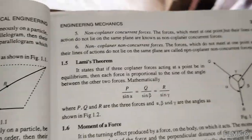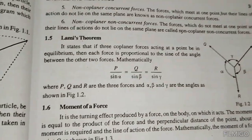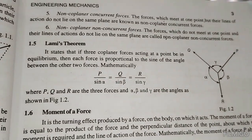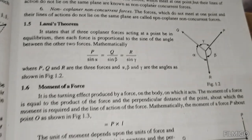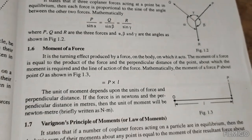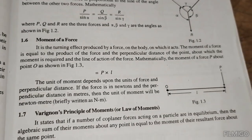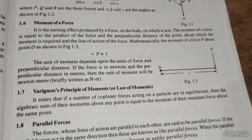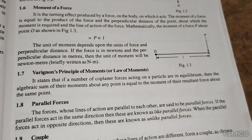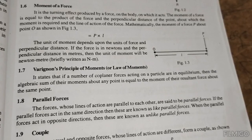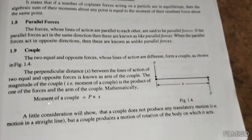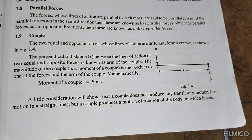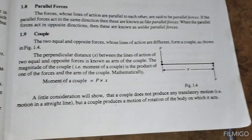Lami's theorem states: P divided by sin alpha equals Q divided by sin beta equals R divided by sin gamma. The moment of a force is P into L, measured in Newton-meters. The moment of a couple is P into the perpendicular distance x.